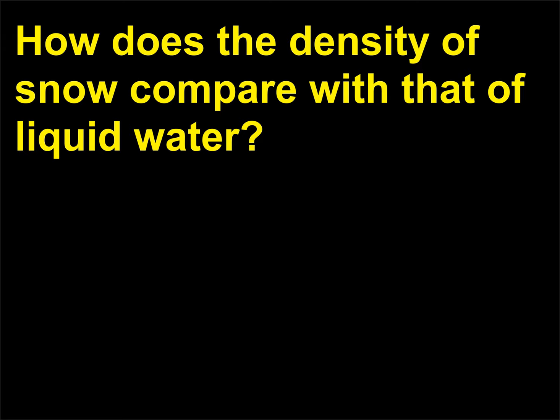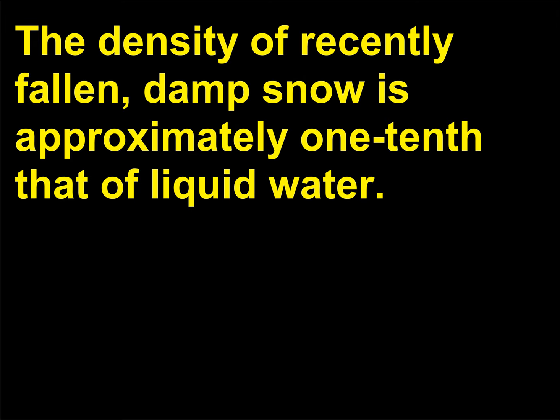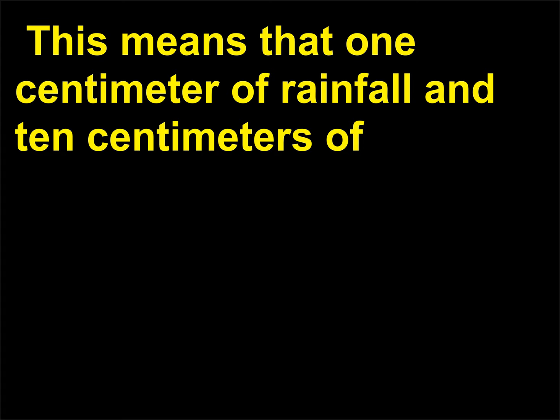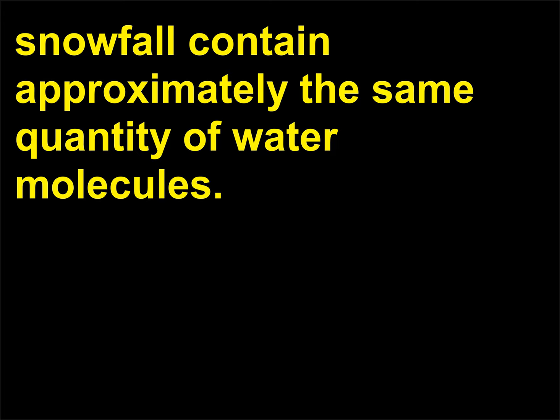How does the density of snow compare with that of liquid water? The density of recently fallen, damp snow is approximately one-tenth that of liquid water. This means that one centimeter of rainfall and 10 centimeters of snowfall contain approximately the same quantity of water molecules.